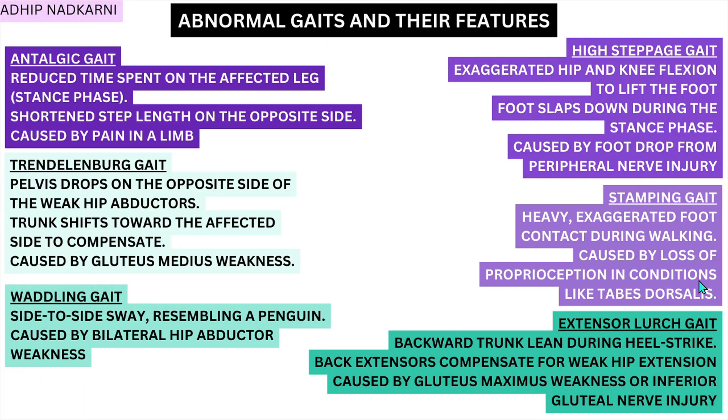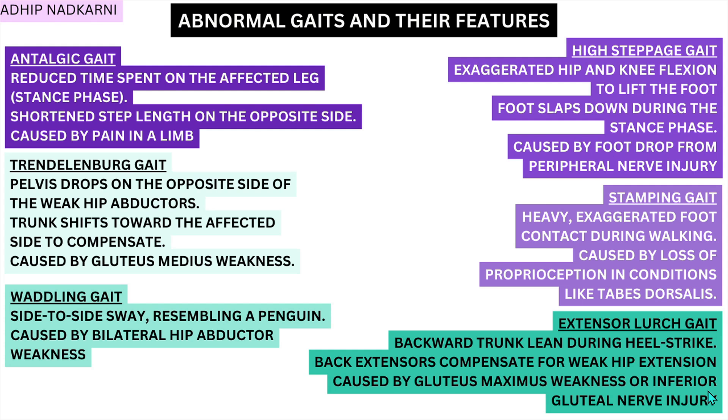Next is extensor lurch gait. Here there is a backward trunk lean during heel strike. This usually happens because the back extensors compensate for weak hip extension, caused by gluteus maximus weakness or inferior gluteal nerve injury. Because the glute is not doing the job of hip extension, the lumbar extensors try to compensate and create that movement — that is the backward lean seen in extensor lurch gait, which could be due to nerve injury.